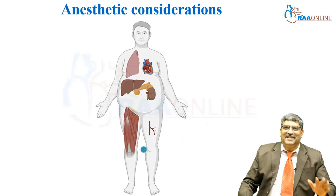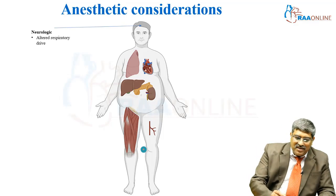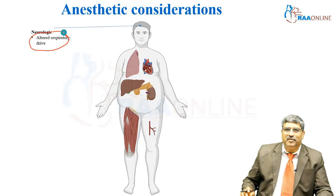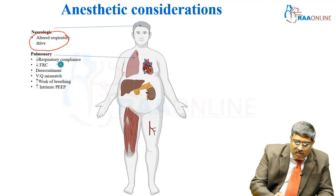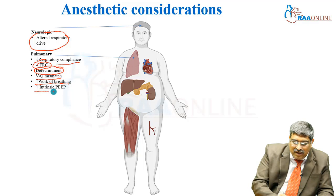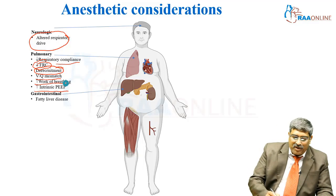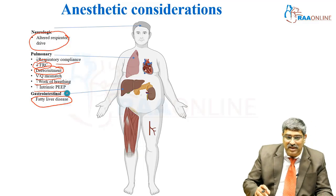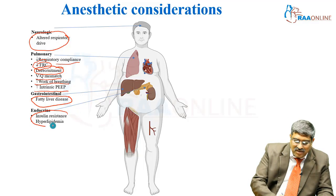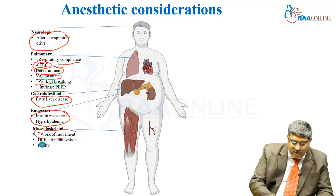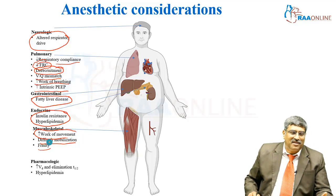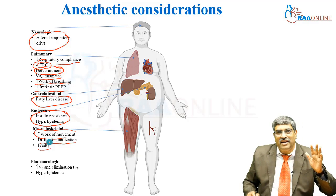Anesthetic considerations in obese patients span multiple systems. From the CNS: altered respiratory drive and decreased drive for ventilation. Pulmonary: reduced respiratory compliance, reduced FRC, loss of recruitment maneuver, V/Q mismatch, increased work of breathing, and increased intrinsic PEEP. Gastrointestinal: fatty liver and even cirrhosis. Endocrine: insulin resistance, hyperglycemia, and hyperlipidemia. Musculoskeletal: increased work of movement, difficult mobilization, and frailty. Pharmacological: increased volume of distribution and increased elimination half-life.